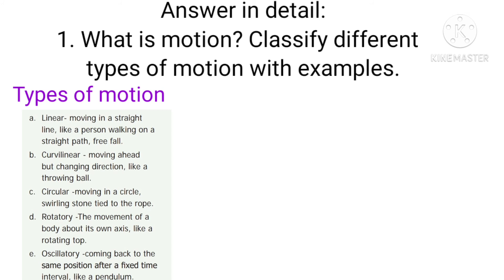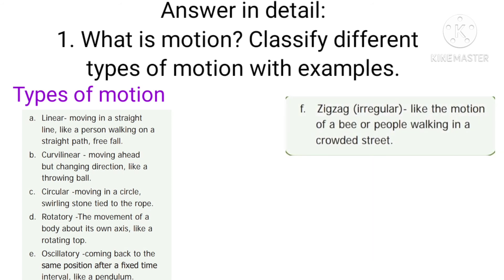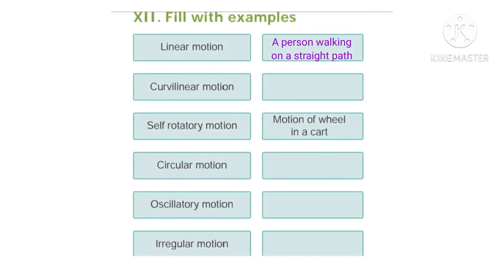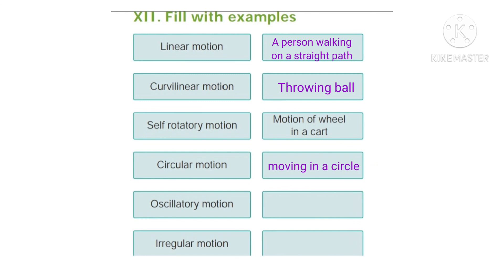Rotatory motion — motion of a body about its own axis; example: a rotating top. Oscillatory motion — a body coming back to the same position after a fixed time; example: a pendulum. Zigzag or irregular motion — motion of a body in different directions; example: people walking in a crowded street. Summary of examples: linear motion — person walking on a straight path; curvilinear motion — throwing a ball; rotatory motion — motion of a wheel in a cart; circular motion — moving in a circle; oscillatory motion — pendulum; irregular motion — people walking in a crowded street.